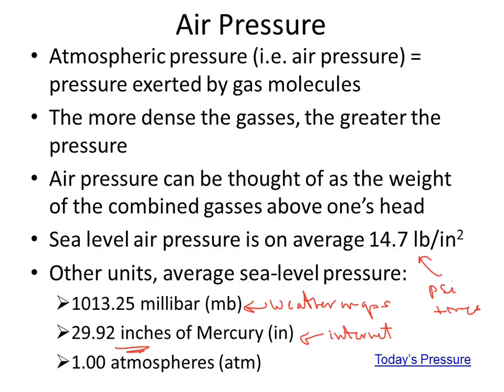Mercury expands and rises as pressure increases — it basically gets shoved upward. PSI is pounds per square inch, but these are all different ways to talk about the pressure of the atmosphere. If you want to talk about wind that's blowing hard or soft, it's all about pressure. Wind is created by a high pressure and a low pressure, and air wants to move from a high to a low.